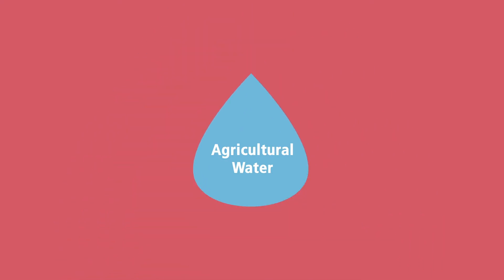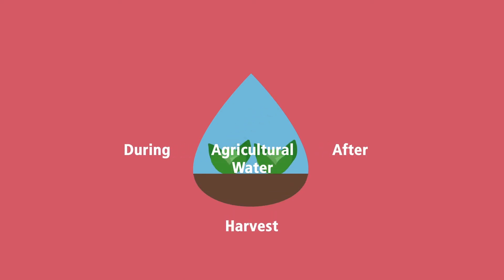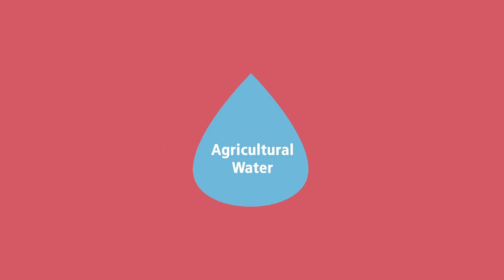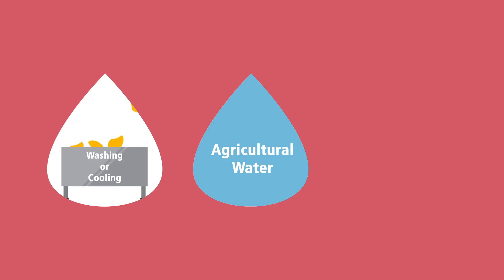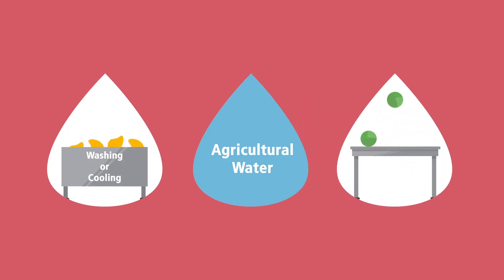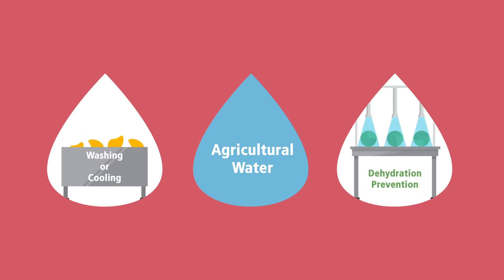Agricultural water can also be used during and after harvest. This can include water used in the field during harvest as well as during packing or holding activities. This water includes water used for washing or cooling harvested produce, and water used for preventing dehydration of covered produce.